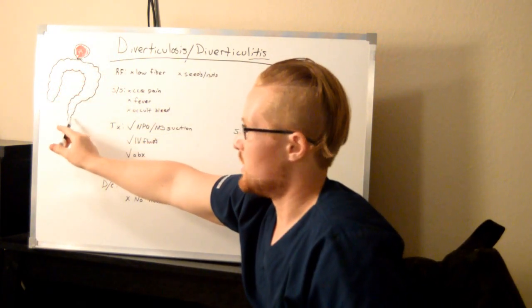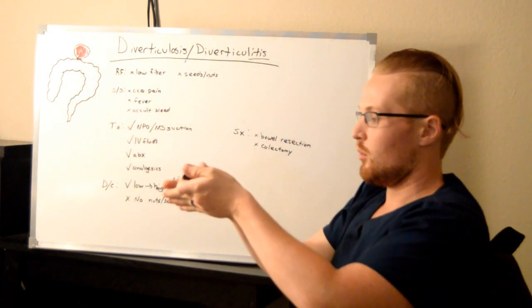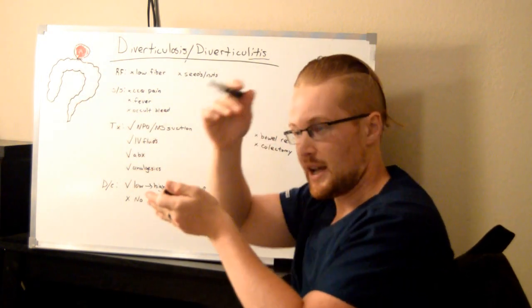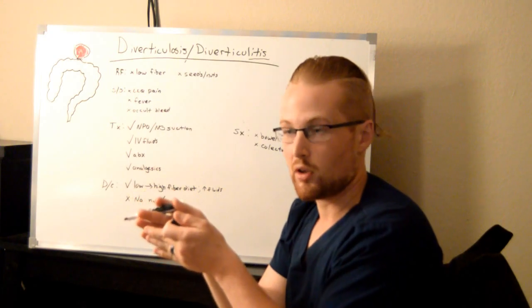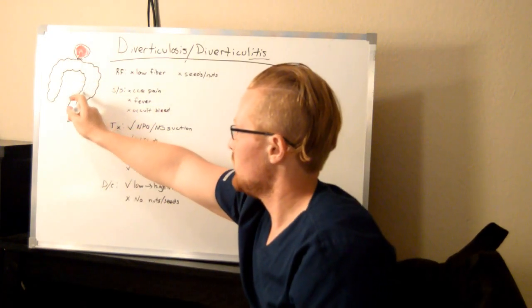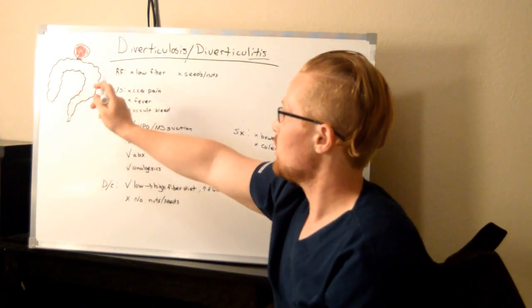This narrowing, this funneling—what happens is pressures increase as it comes towards the end of the large intestine, which would be the left side. So see how it narrows?